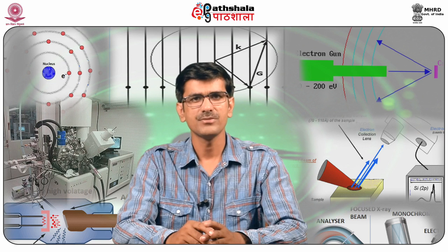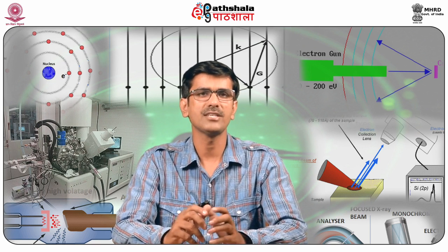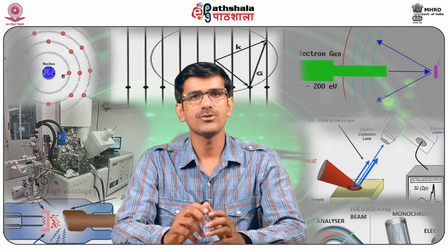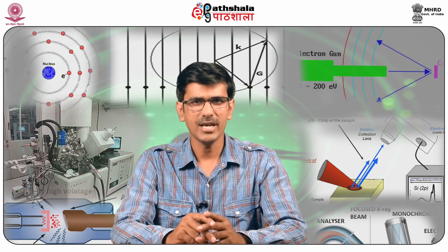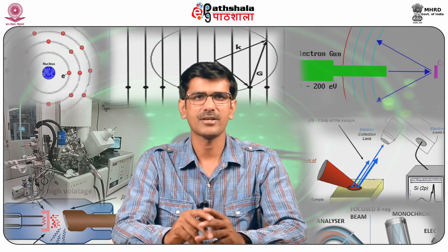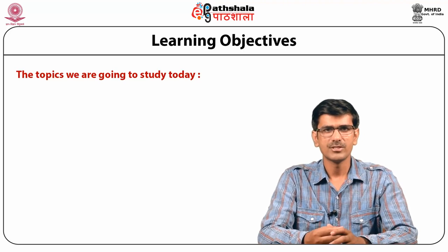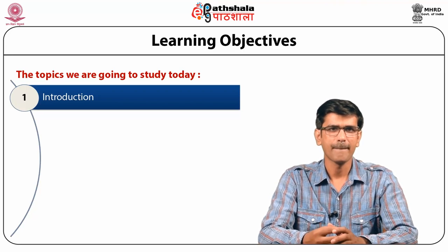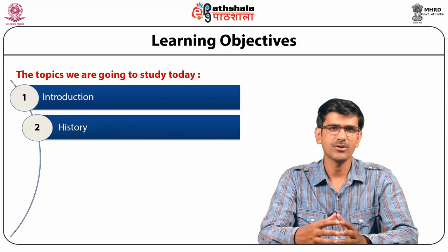X-ray diffraction, or XRD, is a rapid analytical technique primarily used for phase identification of a crystalline material and can provide information on unit cell dimensions. The analyzed material is finely ground, homogenized, and the average bulk characteristics are determined. We will start with the introduction of XRD — what exactly XRD is — then we will look at the history of X-ray diffraction, involving the step-by-step development and advancement of the technique.